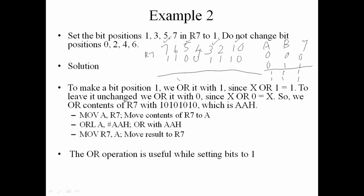If we look at the truth table, the truth table output is 0. In the second input, the output is 0. The input is 0 and the output is 0. In the second input the output is 0, so the output is 0 and 1.